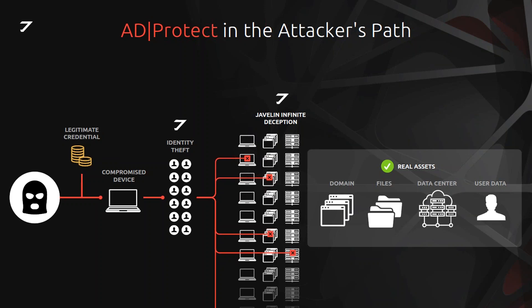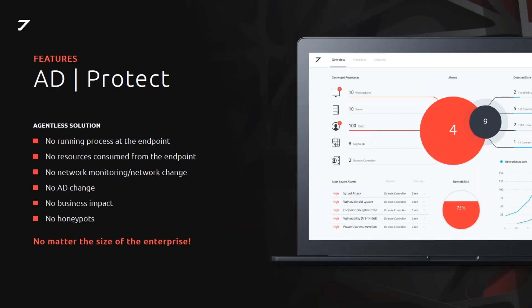We use these answers to allow the attacker to contain themselves. As the attacker tries to learn the domain, Javelin controls the environment view and uses that view against them. Javelin uses natural language processing to pick up the attributes from the existing environment and perform an AI recreation — essentially giving the attacker a recreated view of the domain environment using the same attributes the client has today. However, this view is not real.